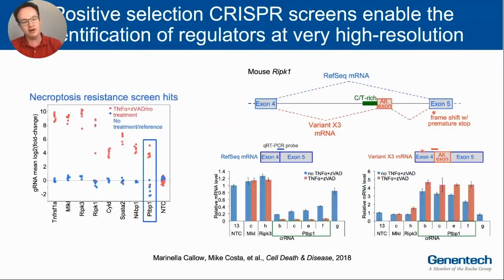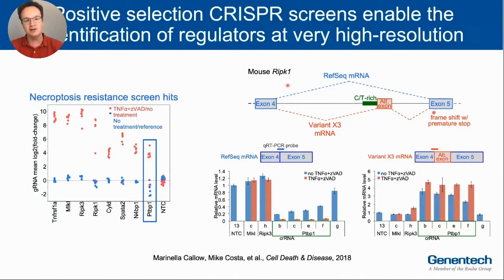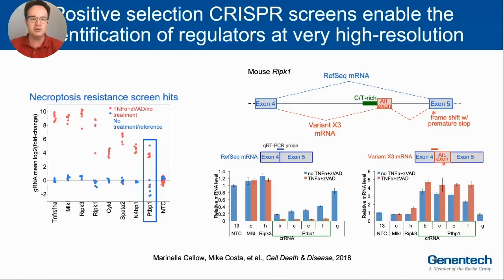We could do a genome-wide screen for regulators of TNF-alpha-induced necroptosis through positive selection, and we can clearly identify the known regulators in this pathway. What is extremely nice is that we can get a really high-resolution look at the additional biology underlying necroptosis and identify over 100 additional modest but significant screening hits. For example, one of those is the RNA binding protein PTBP1, which can mask splice site recognition. Further investigation revealed that PTBP1 works to repress alternative splicing of the canonical necroptosis component RIPK1, and thus a knockout of PTBP1 results in repression of the canonical RIPK1 transcript, favoring an alternative transcript with a frameshift and premature stop, resulting in loss of RIPK1 protein and confirming the rescue seen upon PTBP1 knockout.